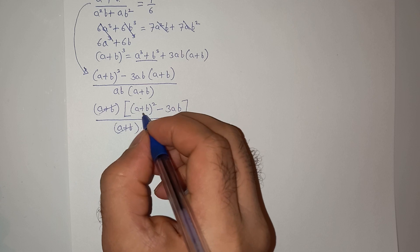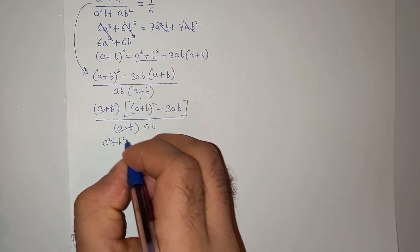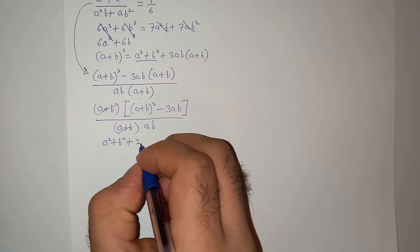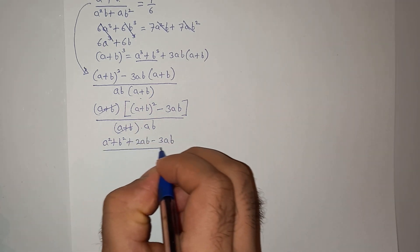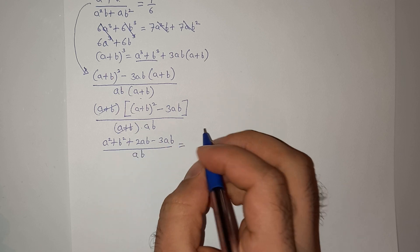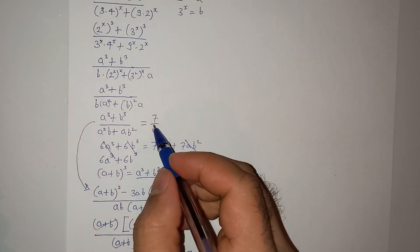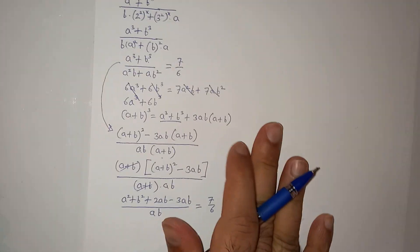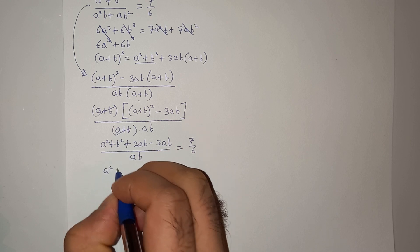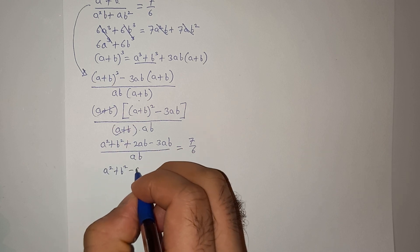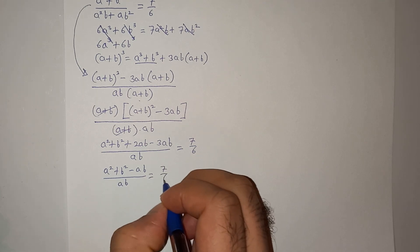Now let's expand the bracket: (a² + b² + 2ab - 3ab) / ab = 7/6, as per the original equation. Simplifying gives (a² + b² - ab) / ab = 7/6.